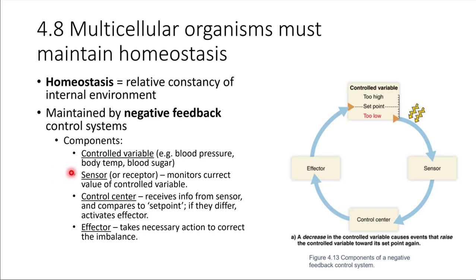There will also be something called a sensor, or receptor, which monitors the current value of the controlled variable and detects if there are changes. We also have what's called a control center — a lot of times this will be in the brain, but not always. The control center receives information from the sensor and makes a decision, comparing whether the variable is at the value it should be or too far off from the set point. If there is a difference, the control center will activate an effector — the thing that takes action to correct the imbalance.